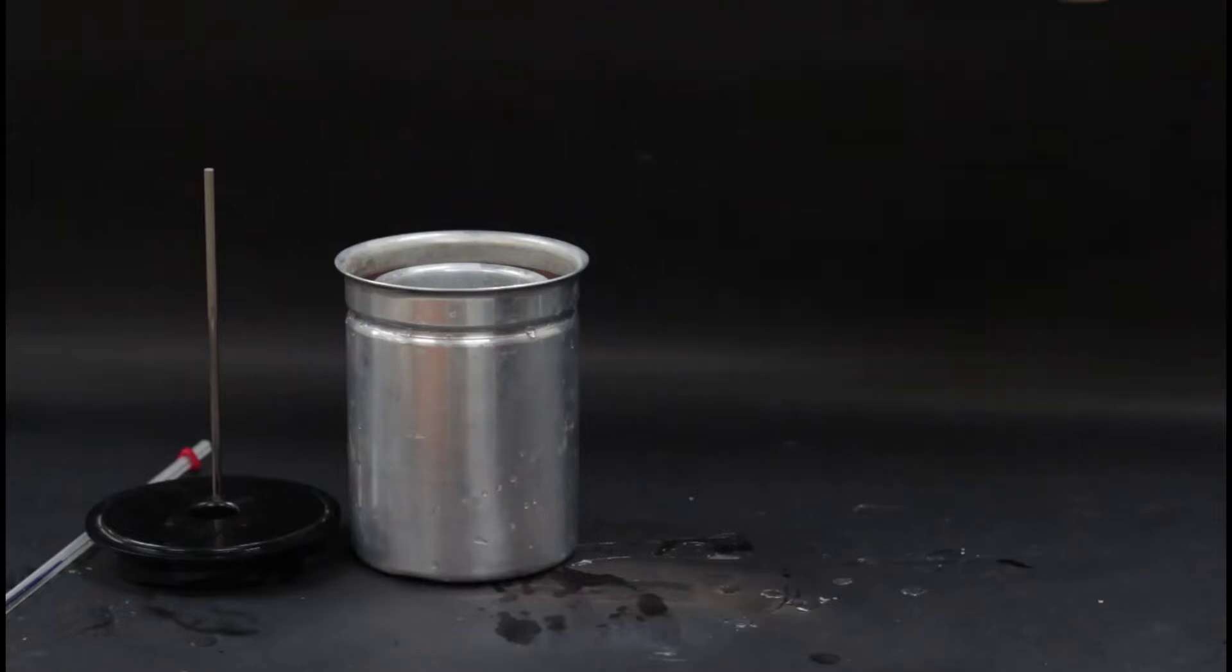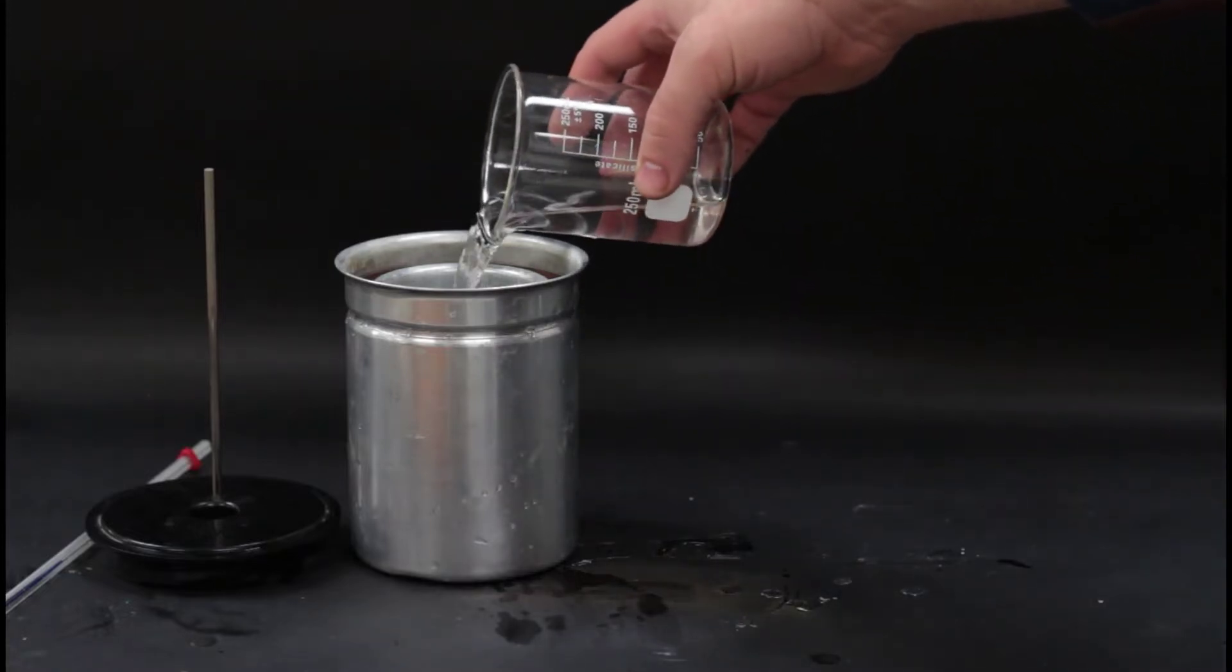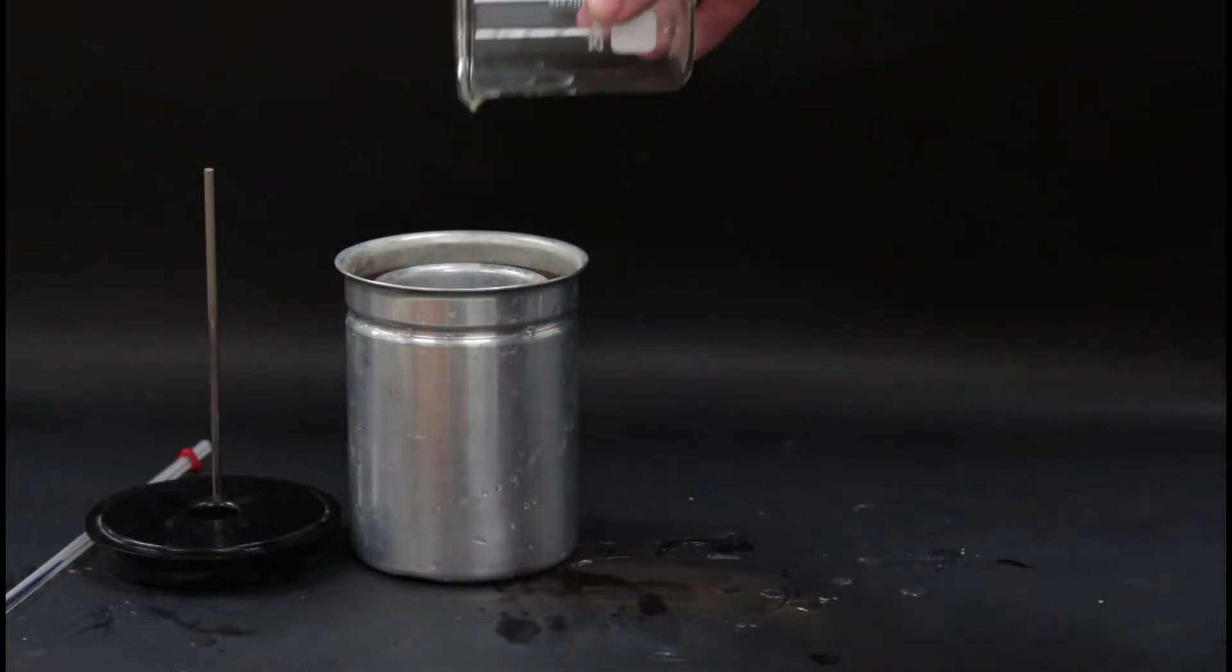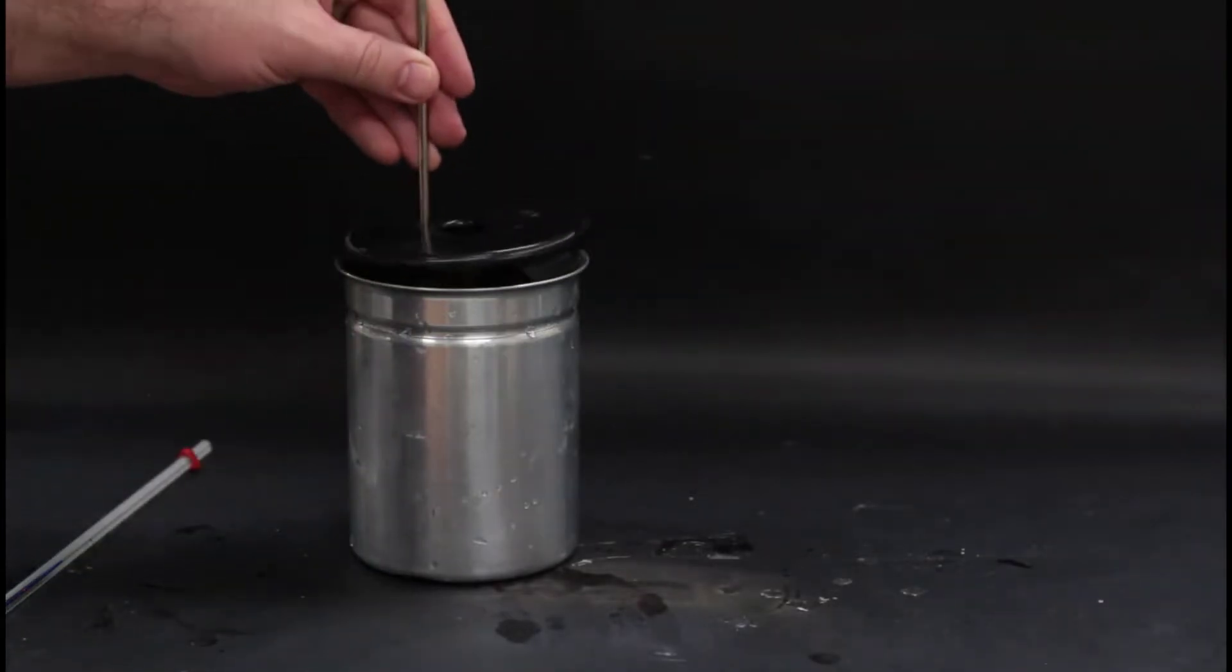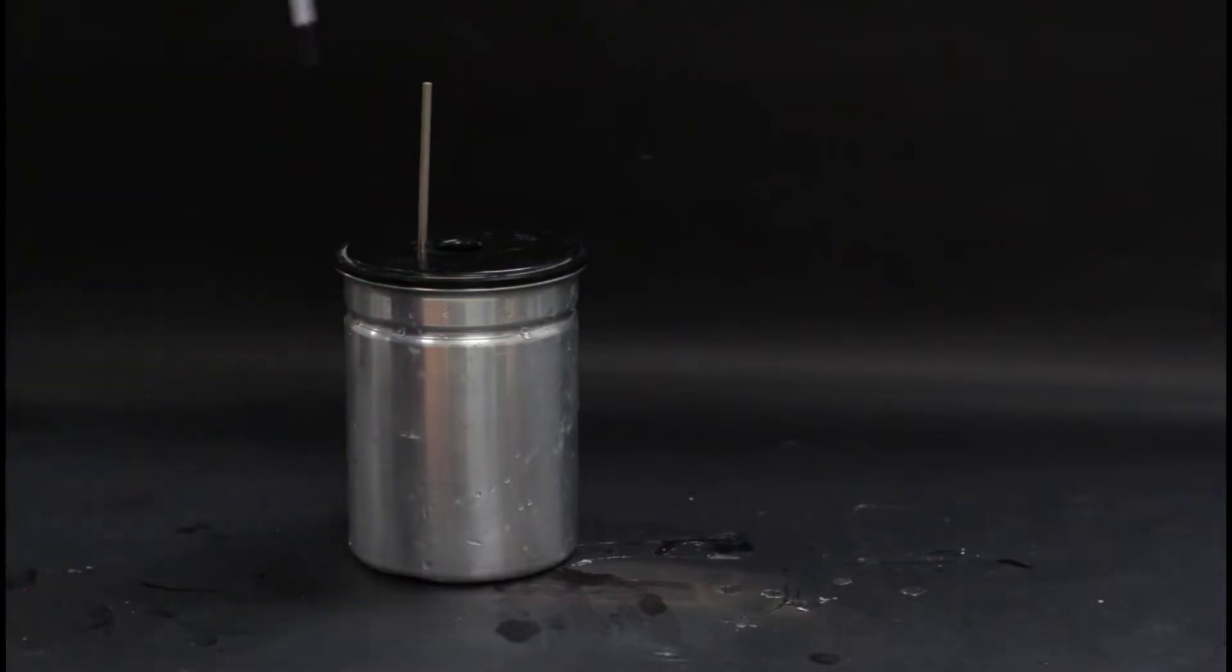For the second part of the lab, fill the calorimeter with another 100 milliliters of distilled water. Measure the initial temperature of the water and weigh the piece of metal. The initial temperature should be room temperature again.